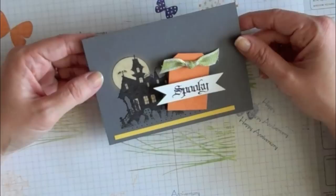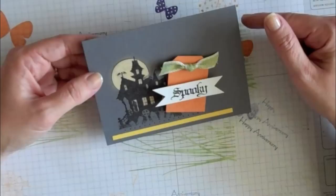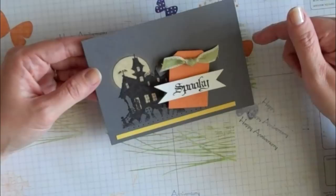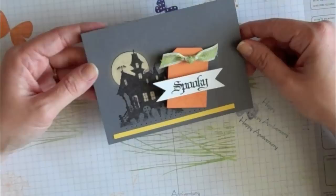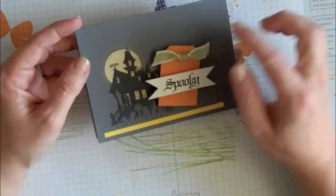Today we're going to do some bleaching. This is a card we're going to make, and it's actually a sample from the new Idea Book and Catalog from Stampin' Up, the 2010-2011. I absolutely love this card, I love the bleaching technique, and I absolutely love Halloween and everything about this card is just great, so I definitely had to duplicate it.